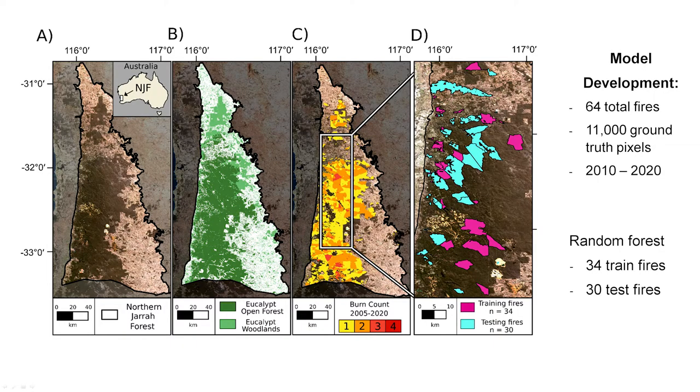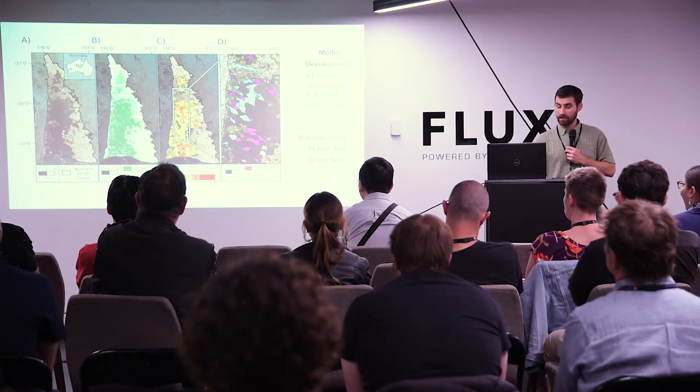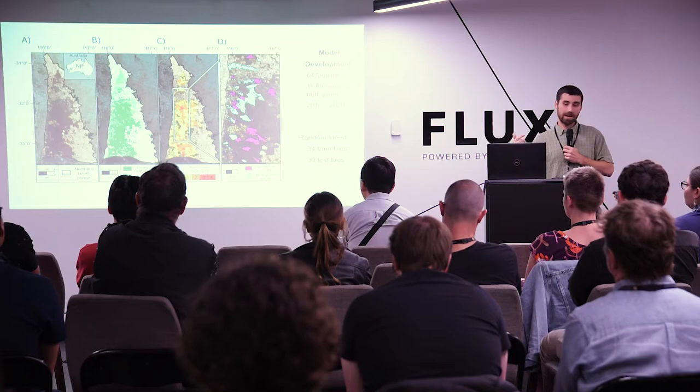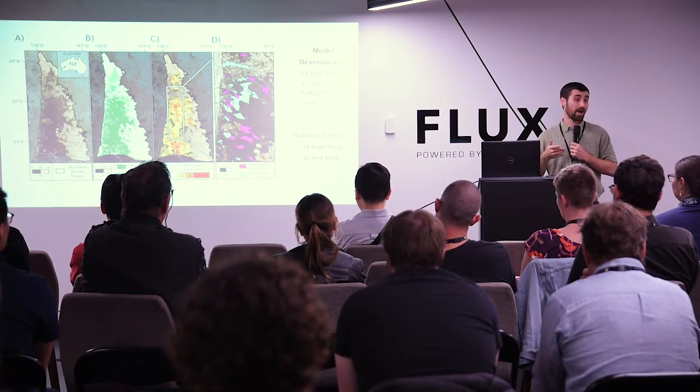Our study area is the Northern Jarrah Forest, a specific bioregion looking at open eucalypt forests and woodlands. As you can see in map C, pretty much the entire Northern Jarrah Forest has been burnt at least once in the last 16 years, with some areas burnt two to three times — from prescribed burns and wildfires. Map D shows a collection of 64 wildfires and prescribed burns where I was able to use NearMap, a private company providing aerial imagery with three to seven centimeter resolution, to find 64 fires with a post-fire image available.